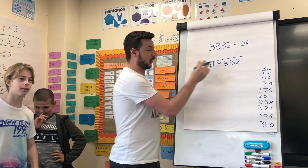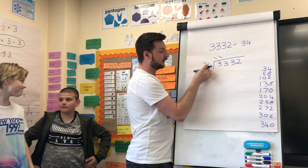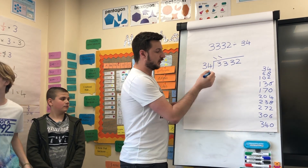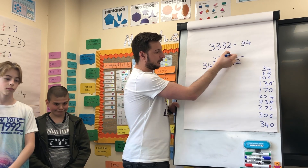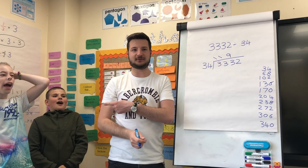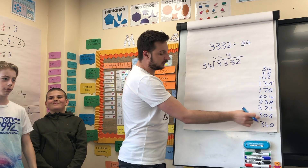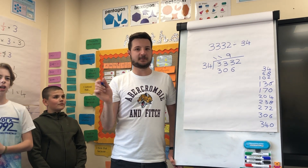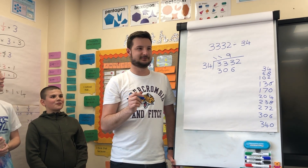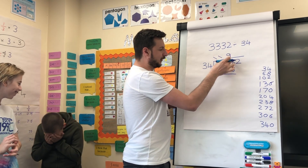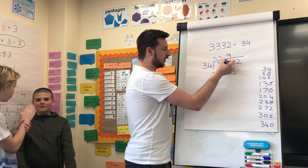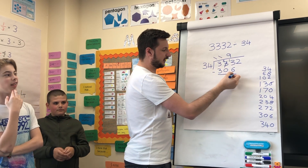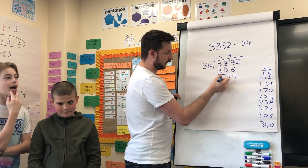Thirty-four into three, does it go? Thirty-four into thirty-three, does it go? Thirty-four into three hundred and thirty-three goes nine times. We're going to write the nine above. Next step boys is? Multiply. There we go. Thirty-four multiplied by nine is three hundred and six — we write that below. The next step boys is? Subtract. There we go. Three hundred and thirty-three take away three hundred and six. We're going to exchange: thirteen take away six is seven. Three hundred and thirty-three gives us zero.